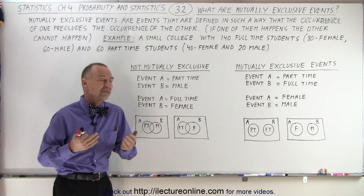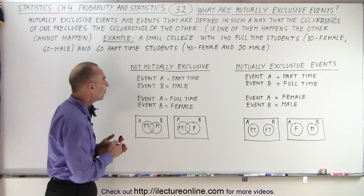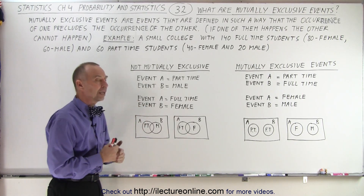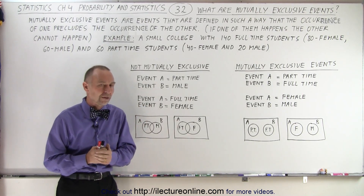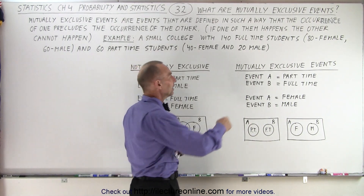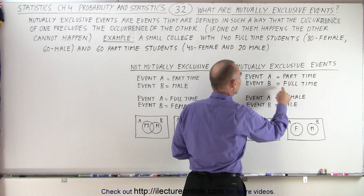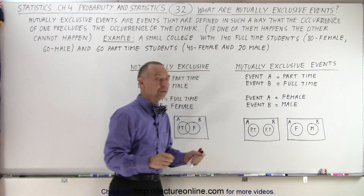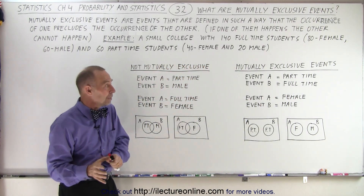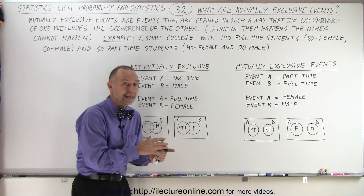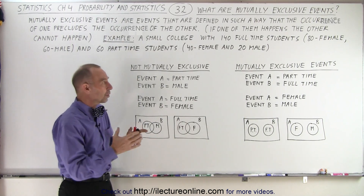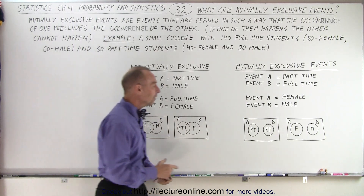So what are some examples of mutually exclusive events and what are some examples of not mutually exclusive events? Well, for example, let's say that event A is that it's a part-time student and event B is that it's a full-time student. A student cannot, at the same time, be a part-time and a full-time student. So those are what we call mutually exclusive events.